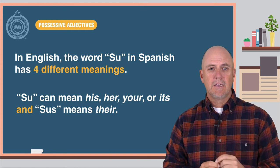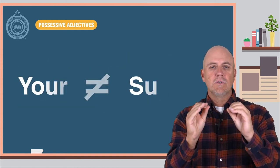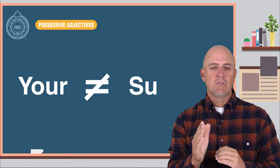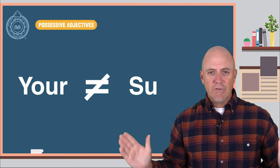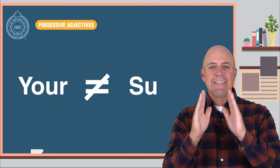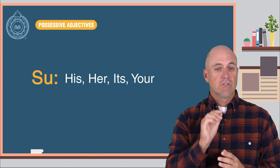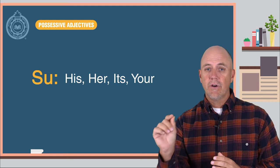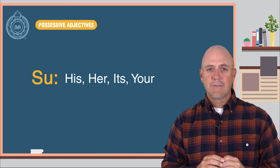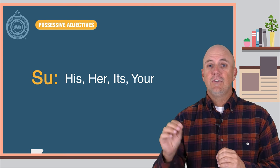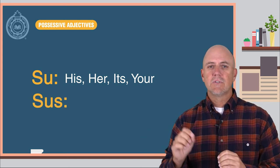I'm going to repeat that because almost all students want to say your to translate su every time in English, and that is not correct. Su equals his. Su can also equal her. Su could also equal its. Su could also equal your. Sus equals their.